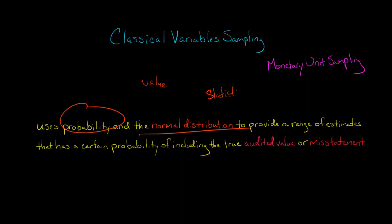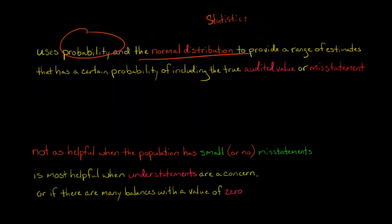It's more difficult to use classical variable sampling, so it's not as common as monetary unit sampling in actual audit practice. There are a couple other pros and cons as well.